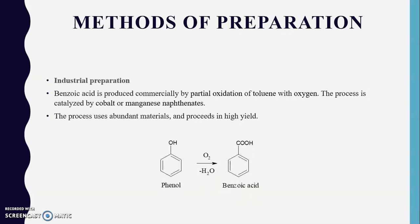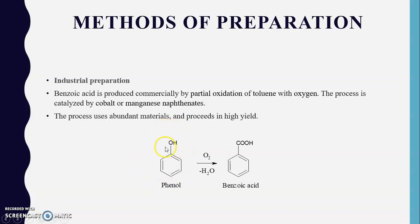In the industrial preparation reaction, toluene undergoes partial oxidation in the presence of oxygen to be converted into benzoic acid. The process is catalysed by cobalt and manganese naphthenate, which act as oxidizing agents, converting the alkyl group of toluene into a carboxylic acid group to yield benzoic acid.